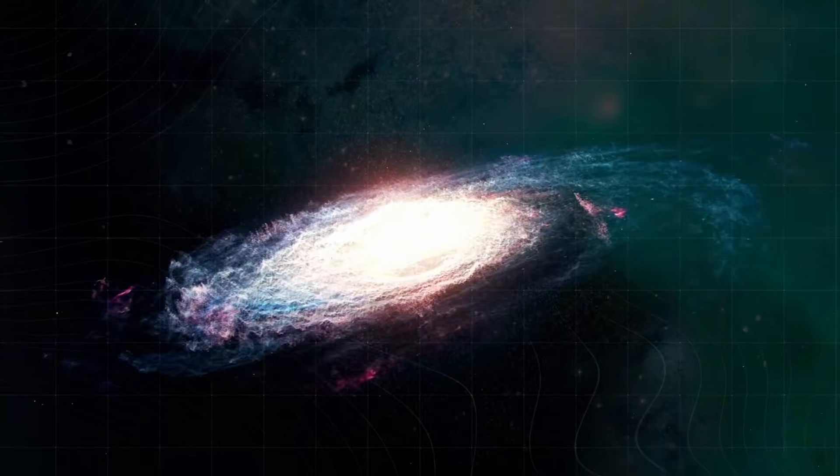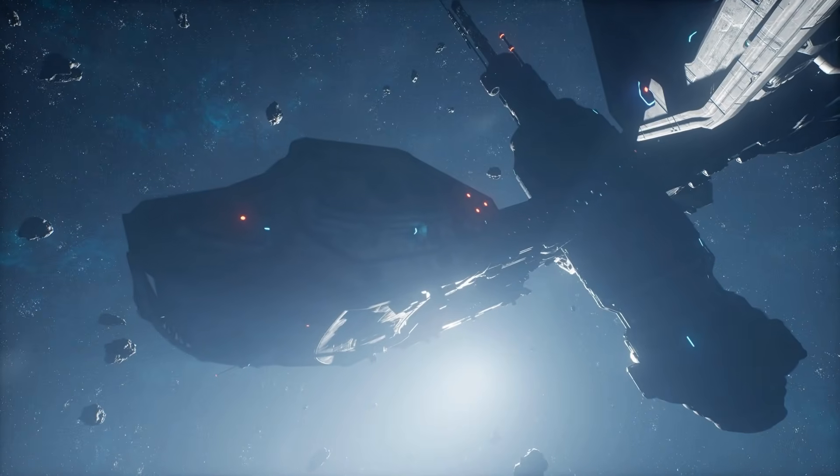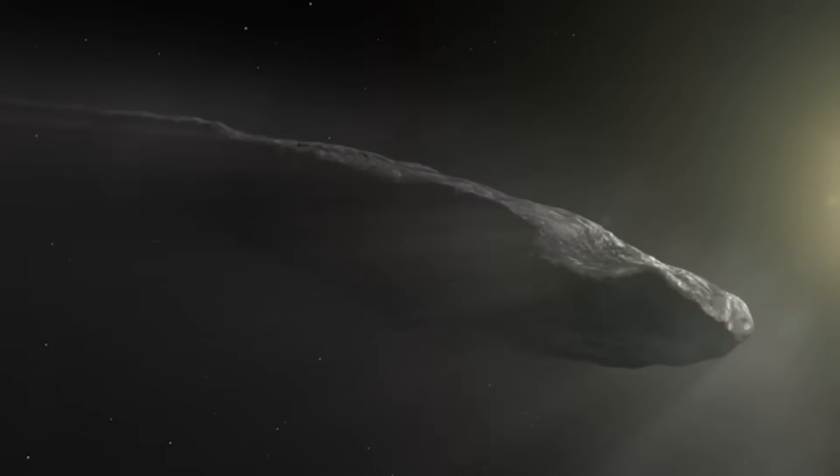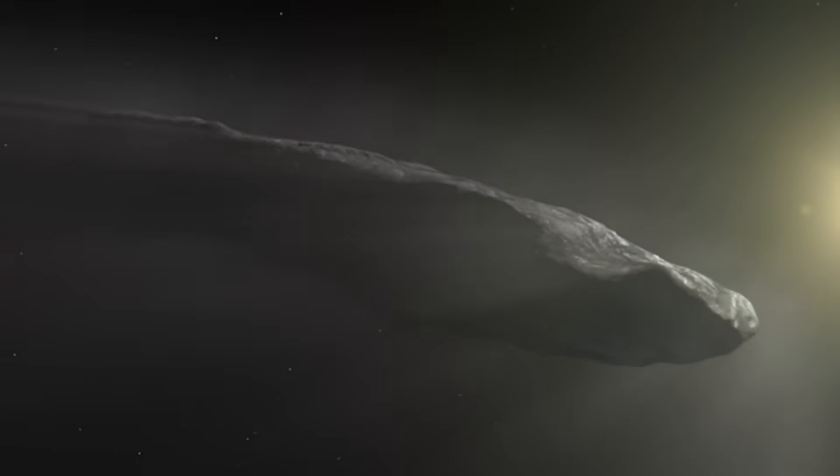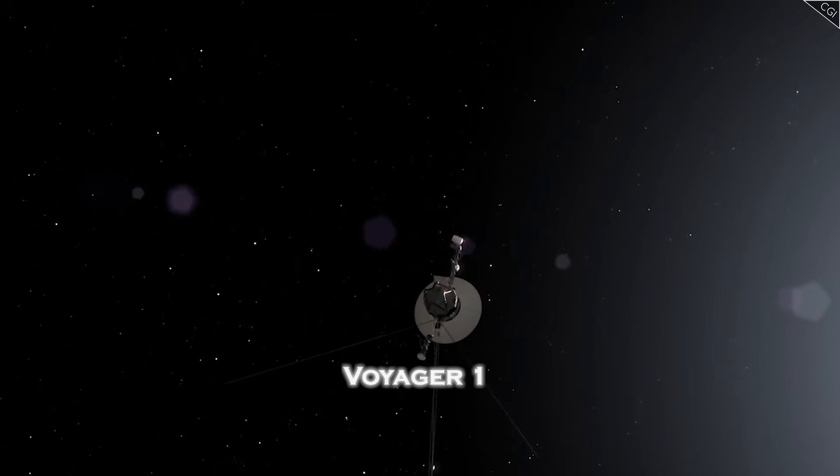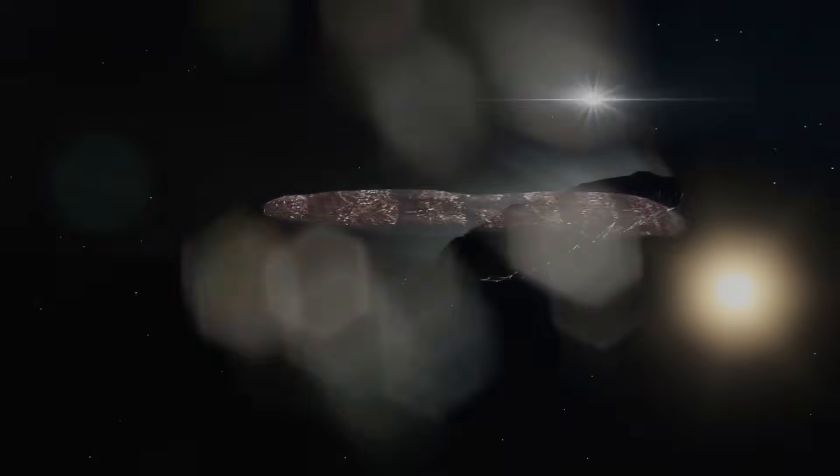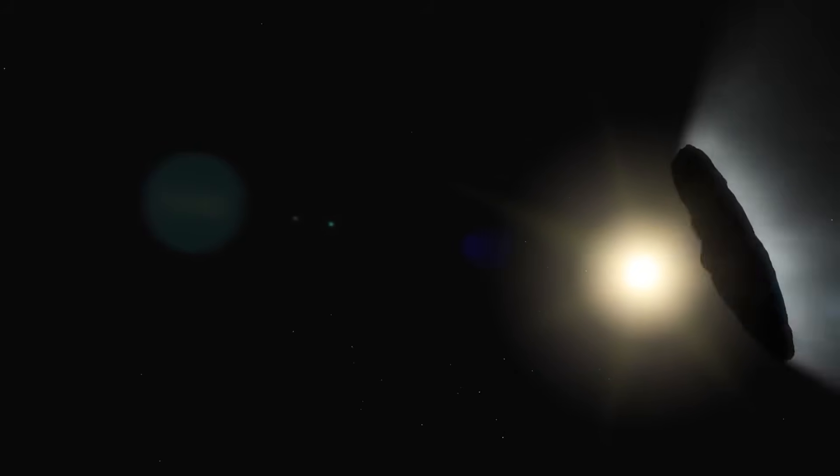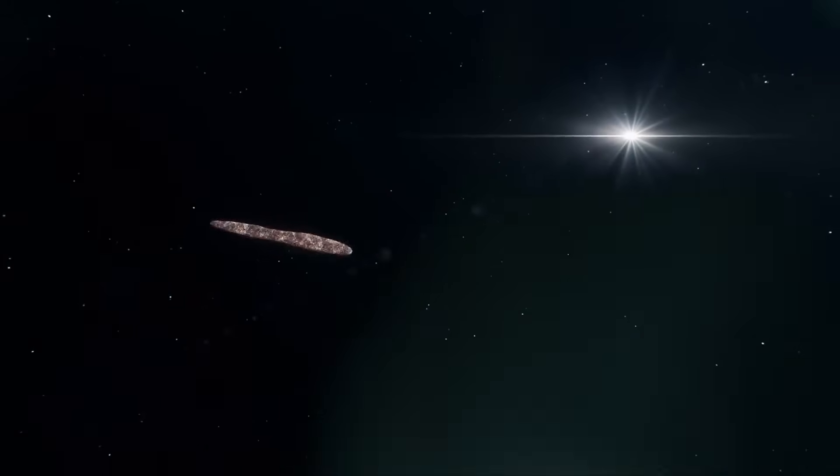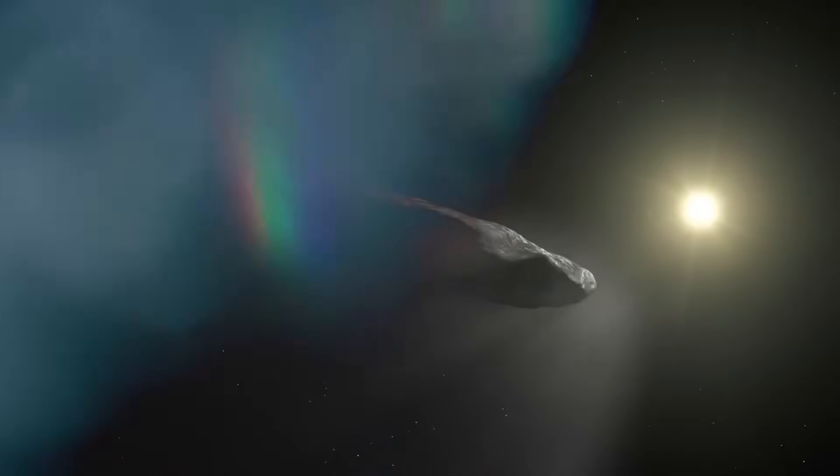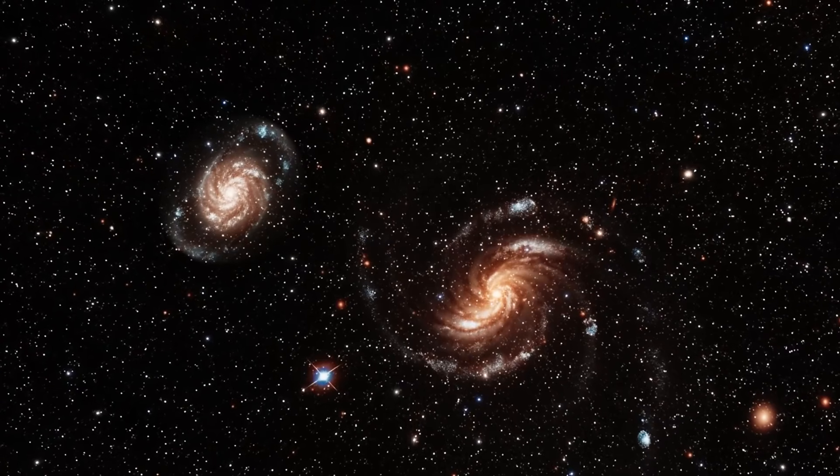3I Atlas might not be a spaceship, or an asteroid, or a message in a bottle from across the stars. It might be something far more advanced, a sentient probe, a cosmic sensor, or even a technological entity designed to awaken when it detects intelligence. And now, thanks to Voyager 1, it has detected us. But here's the most terrifying thought. If that signal Voyager received wasn't a call for help, if it wasn't an answer to our message, what if it was a warning, a countdown? And if that's true, then the question isn't, what is 3I Atlas? The real question is, what's coming next? Because the stars just looked back, and they're not blinking.